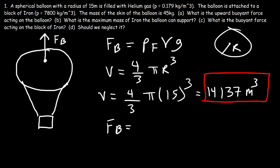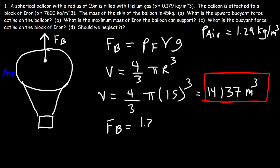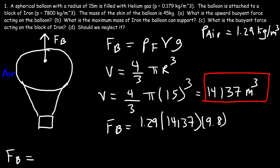Now we have everything needed to calculate the buoyant force. The density of the air outside the balloon is 1.29 kilograms per cubic meter. So the buoyant force is 1.29 × 14,137 × 9.8, giving us an upward buoyant force of 178,720 newtons. The reason it's so large is because the volume of the balloon is huge.